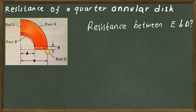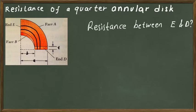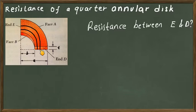We are interested in finding the resistance between face D and face E, so the current flows in this direction or the other way. We want to find the resistance in terms of the dimensions of this material. We can think of this quarter annular disc as slices of quarter rings.